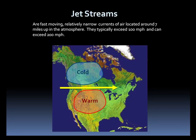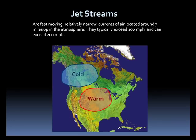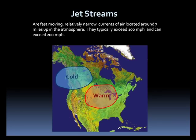Jets normally have some curvature to them, unlike the straight line jet currently depicted. This is because the air masses commonly displace each other, moving not only east to west, but north and south. So if we move these air masses on the image to something more typical in the atmosphere, you'll see how the jet stream becomes curved.